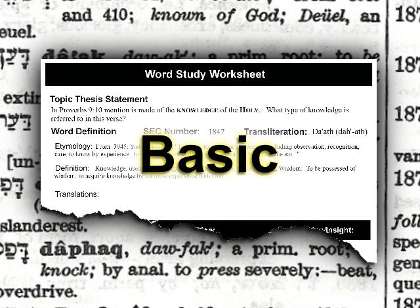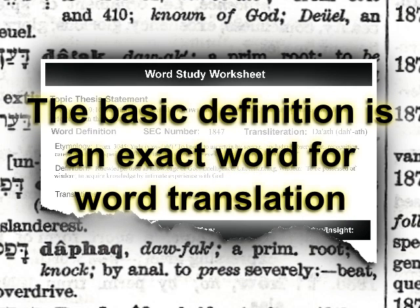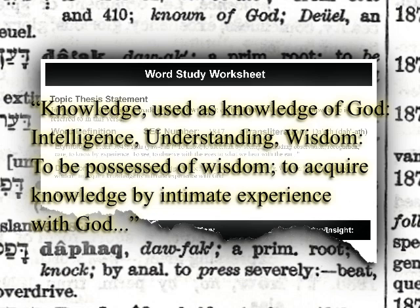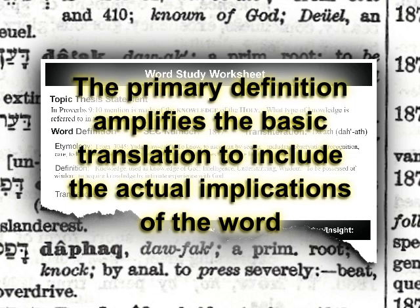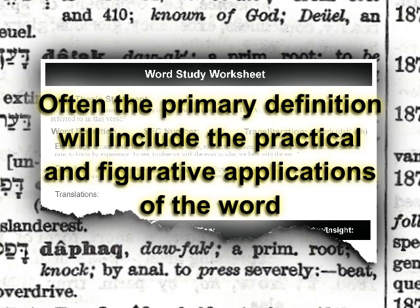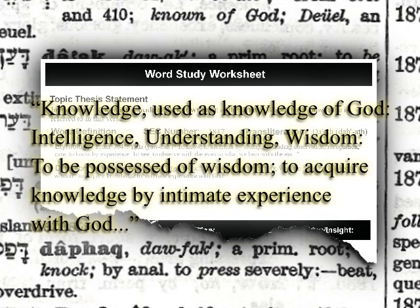The term 'basic' indicates the simplest form of the definition — an exact word-for-word translation. For example, when you consider Da'ath, the basic definition is simply 'knowledge.' The primary definition is an expanded form of the basic definition. Usually, the primary definition amplifies the basic translation to include the actual implications of the word, including practical and figurative applications. For Da'ath, the primary definition is: used as knowledge of God, intelligence, understanding, wisdom.